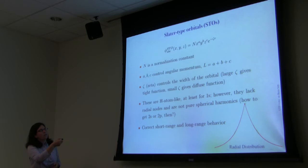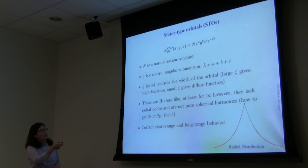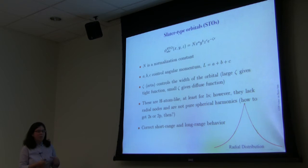The shape of Slater-type orbitals has a normalization constant, then X, Y, and Z to the A, B, and C powers respectively. A, B, and C control angular momentum — the total angular momentum is the sum of A, B, and C. The key shape-determining factor is e^(−ζr). Zeta controls the width: a large zeta gives a very tight orbital, and a small zeta gives a very diffuse function.